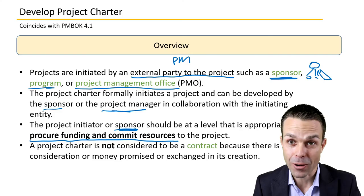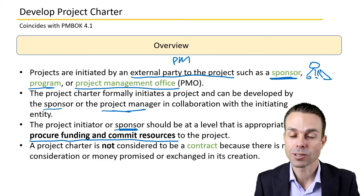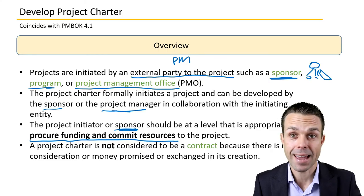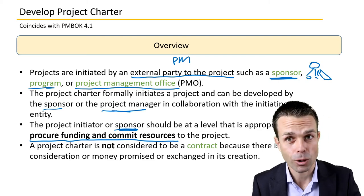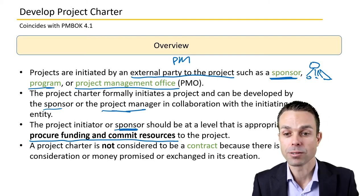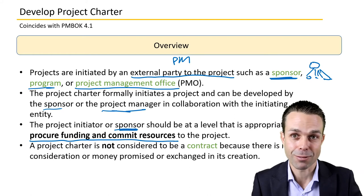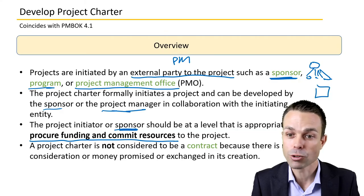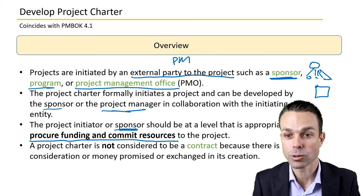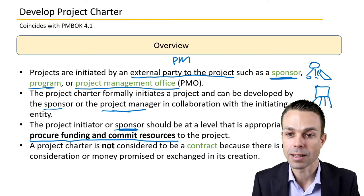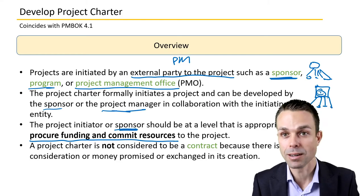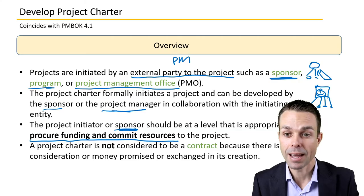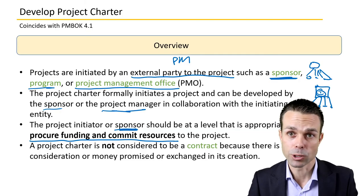The project initiator or sponsor should be at a level that is appropriate to procure funding and commit resources to the project — this is very important. The project sponsor needs to be at the right level so they can commit resources themselves without having to go elsewhere. If they control the area, the resources, and can commit funding, then you've got it all in one place. It's much easier — just keep that one person happy, go to them for decisions and any changes.